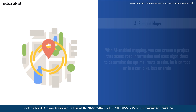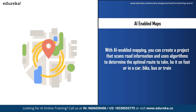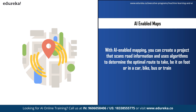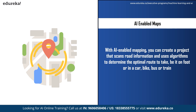The next AI project idea is AI-enabled maps. You can create a project that scans road information and uses algorithms to determine the optimal route to reach a destination faster, and to determine the best mode of transportation — on foot, car, bus, or train. You can also implement a voice assistant that guides users about turns, potential roadblocks, traffic, and creates an augmented reality map in real time.